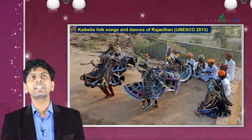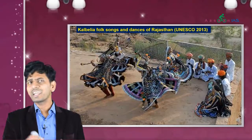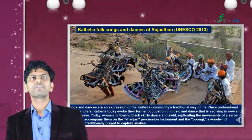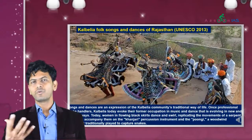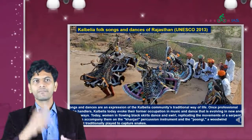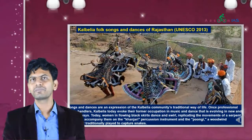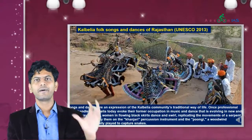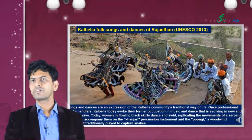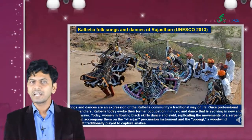Next, Kalbeliya folk songs and dances from Rajasthan are also in the UNESCO list. Kalbeliya is a kind of snake dance. The Kalbeliya community performs this dance; the men use a percussion instrument called 'kanjari' and a nadhaswaram-type instrument to produce sound while the community performs this dance. Just remember: Kalbeliya dance belongs to Rajasthan.